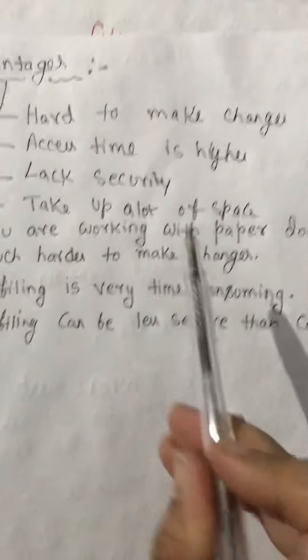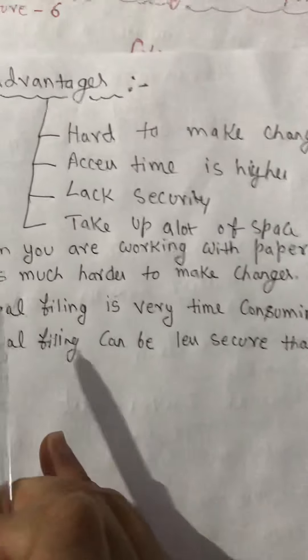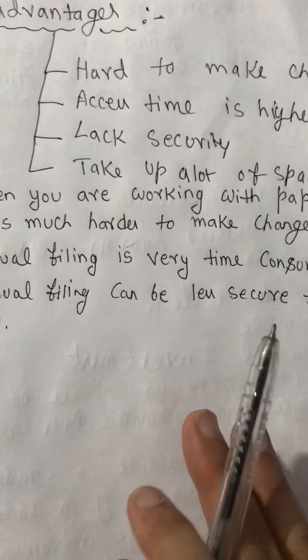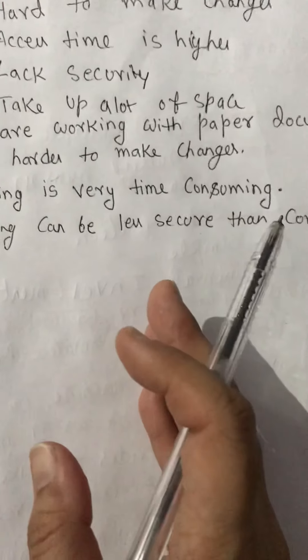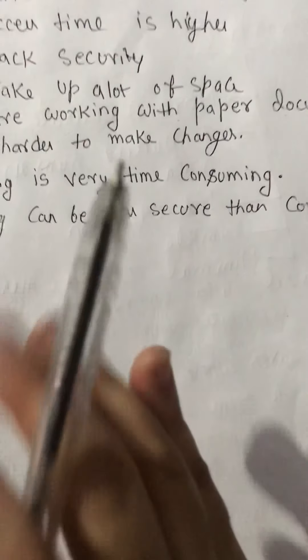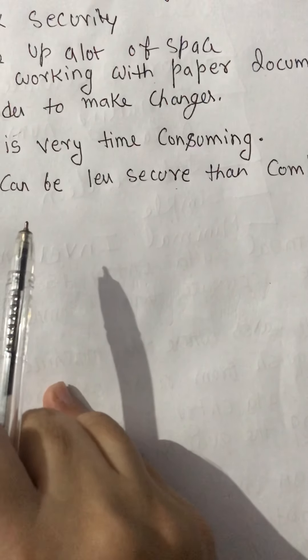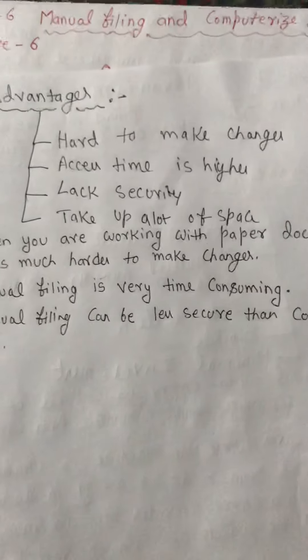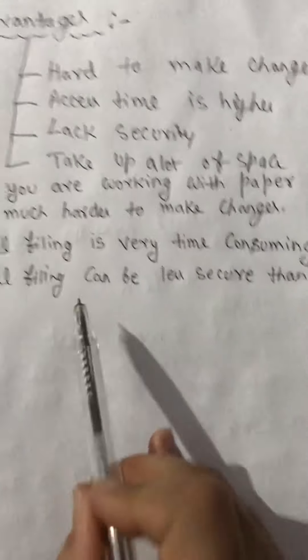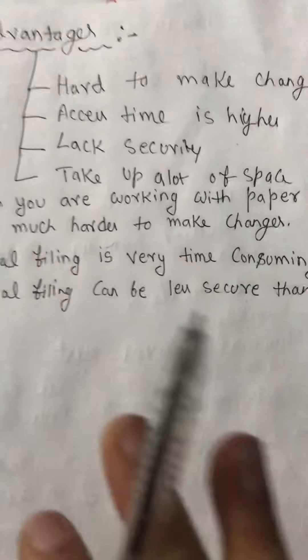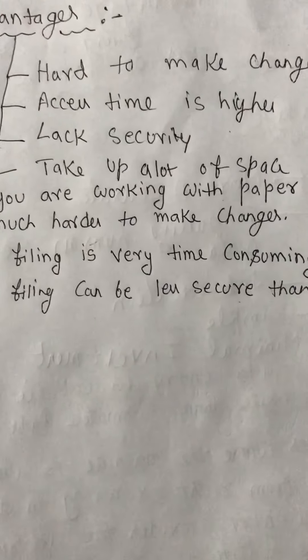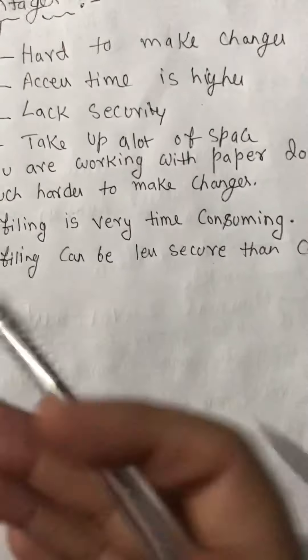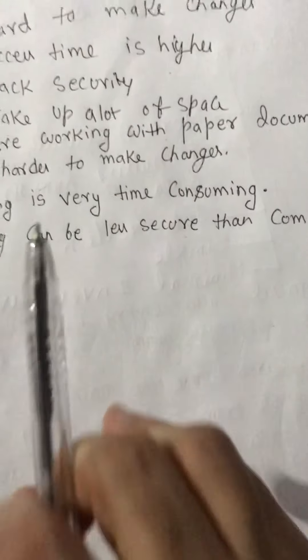Hard to make changes: when you are working with paper documents, it is much harder to make changes. Every time you want to make changes, you will have to make a copy so you don't destroy the original with any modification. This means the modification process is more time consuming. Then, access time is higher: manual filing is very time consuming. Not only do you have to organize and store the files, but accessing or retrieving information when needed can take a lot of time.